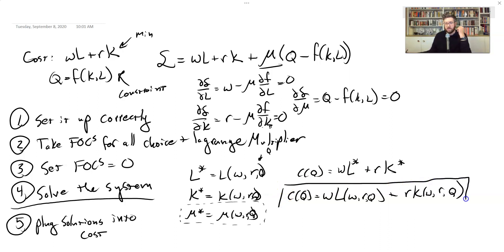At the end of the day, we have a function that tells us given the wage rate, given the amount of capital and given the quantity that you want to hit, here's the cheapest way to do it. So next, now that we've sort of seen the framework, let's do an example to see how this all works in the, how this actually plays out.